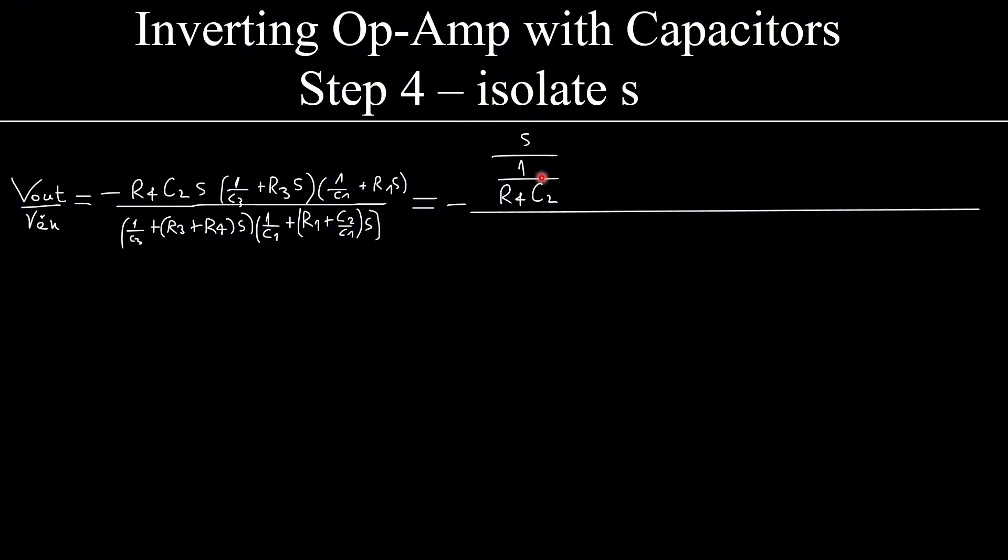You see why? Because this is going to be multiplied with this, so it's the same as this, the exact same. How much is this? I take 1 over C3 and put it outside, and I have 1 plus s over 1 over R3C3. You see why? If you don't, pause the video here and try to understand that this, or look at this very closely - it's the exact same as this. It's key that we understand these transformations.